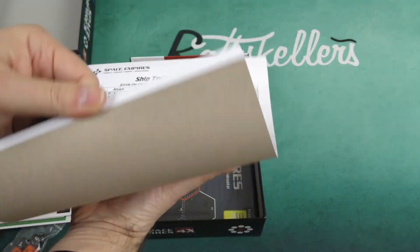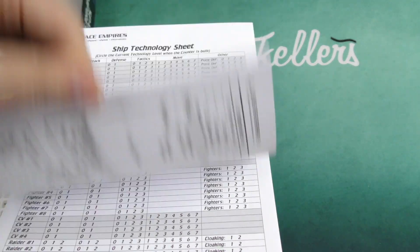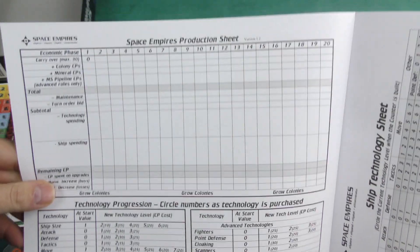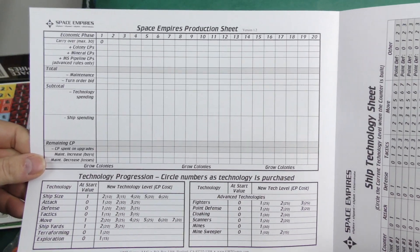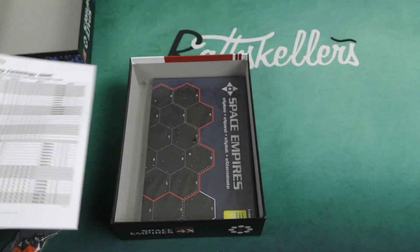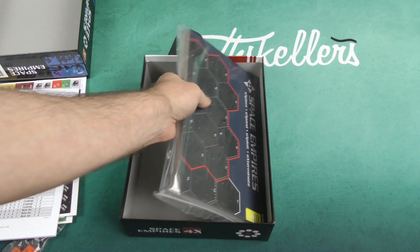Ship technology sheet, and there are a number of these, double-sided. One side has the ship technology sheet, and the other side has the production sheet, the economic phase, circle numbers as technology is purchased. Maybe it replaces tracks and things along those lines in a more standard Euro game.